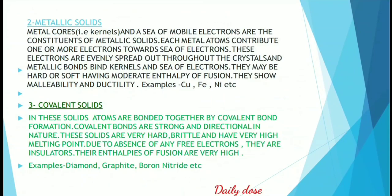Metallic solids consist of metal cores — called kernels — and a sea of electrons. Each metal atom contributes one or more electrons to this sea, which is evenly spread throughout the crystal. Metallic bonds bind the kernels and the sea of electrons. They may be hard or soft, with moderate enthalpy of fusion. They show malleability — metals can be beaten into thin sheets — and ductility — they can be drawn into thin wires. They are good conductors of heat and electricity. Examples are copper, iron, and nickel.